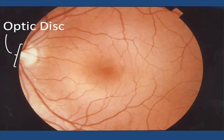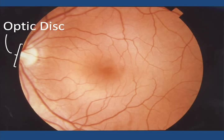The terminology used to describe the central retina is confusing. The terms macula and fovea seem to mean different things to different people. These discrepancies will be noted in the following discussion.